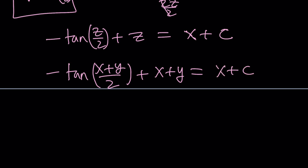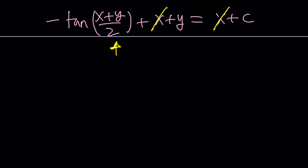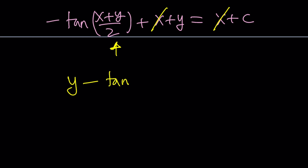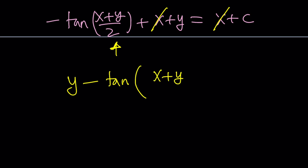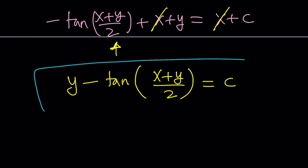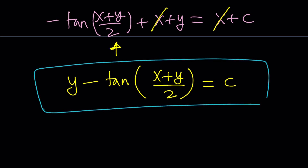So substituting z equals x plus y, we get negative tangent of x plus y over 2 plus x plus y equals x plus c. The x's cancel out on both sides. So the solution is y minus tangent of x plus y over 2 equals c. This difference is always a constant.